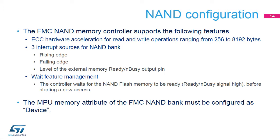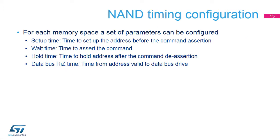The FMC NAND memory controller includes support for the following features. Error code correction: the ECC algorithm can perform 1-bit error correction and 2-bit error detection per 256 to 8,192 bytes read or written from or to the NAND Flash memory, based on the Hamming coding algorithm. Three interrupt sources can be enabled to detect a rising edge, falling edge, or level on the ready/busy signal. Wait feature management: the controller waits for the NAND Flash memory to be ready before starting a new access. The MPU memory attribute of the FMC NAND bank must be configured as a device.